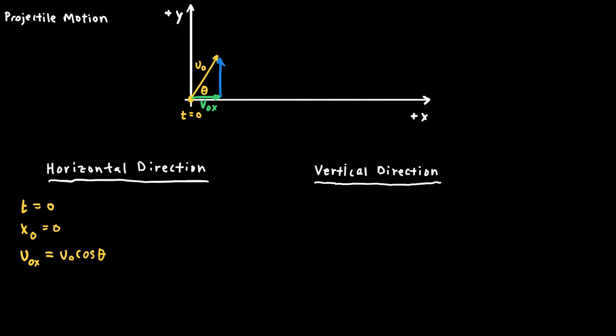When considering an object moving through space, there is one acceleration it typically experiences: a downward acceleration pointing toward the surface of the earth, equal to g = 9.8 m/s². Projectiles moving freely through the air — whether launched from a cannon, kicked, or hit — only experience acceleration in the vertical direction. In the horizontal direction, if we ignore air resistance, the acceleration in the x direction is equal to zero.